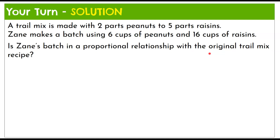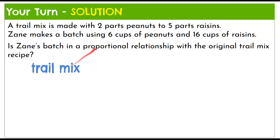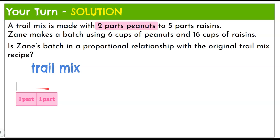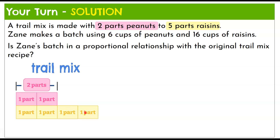Welcome back. Let's start by making the bar diagram for the original trail mix recipe. It starts with two parts peanuts, so we make two boxes — one part, one part — for our two parts peanuts. The second part of the recipe is five parts raisins, so we make five boxes representing our five parts raisins in the trail mix.